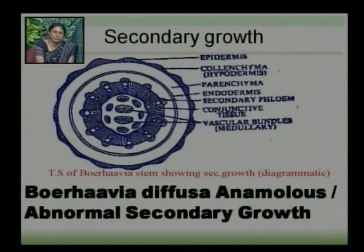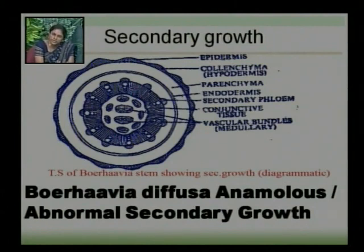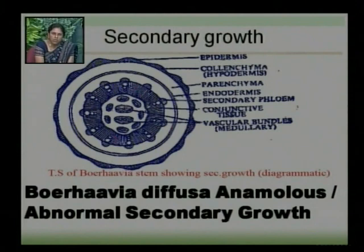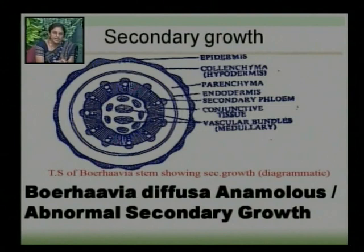The diagram shows the TS of Borhevia stem showing secondary growth. The outermost layer is epidermis, then the second layer is colenchymatous hypodermis, located just beneath the epidermis, having three to five layers of colenchymatous cells. Then the third layer is cortex, followed by a single layer of endodermis. Endodermis is followed by pericycle, and the central region is the pith region. In Borhevia, the pith region has three different types of vascular bundle: outer ring, middle ring, and inner ring.